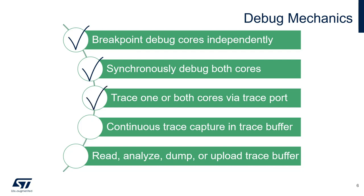Tracing information from both cores is combined into a single trace stream and output to a real-time trace port analyzer. There's an ID embedded in the trace to identify the source of the information packet. Lastly, the circular trace buffer information can be stored on-chip, dumped off-chip to the trace port analyzer, or it can be read by the debugger, either processor core, or uploaded to a host machine using one of the MCU's many communication interfaces.